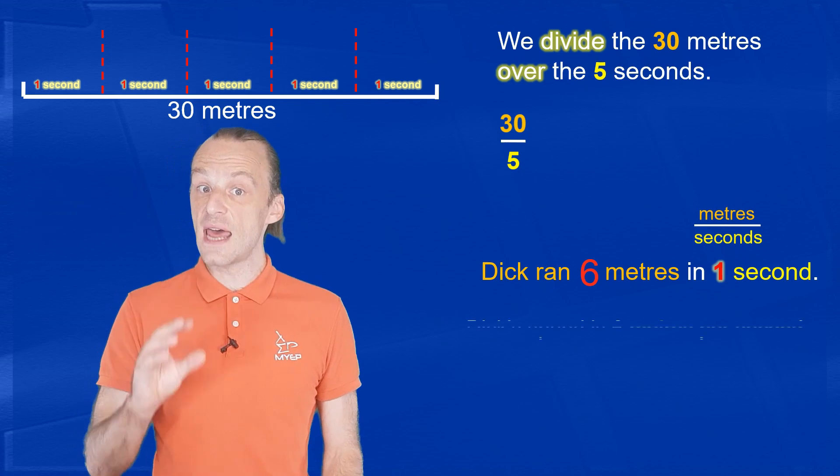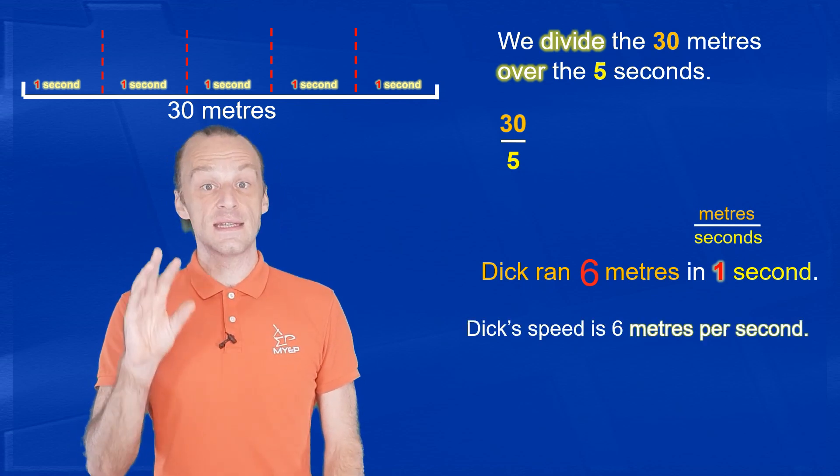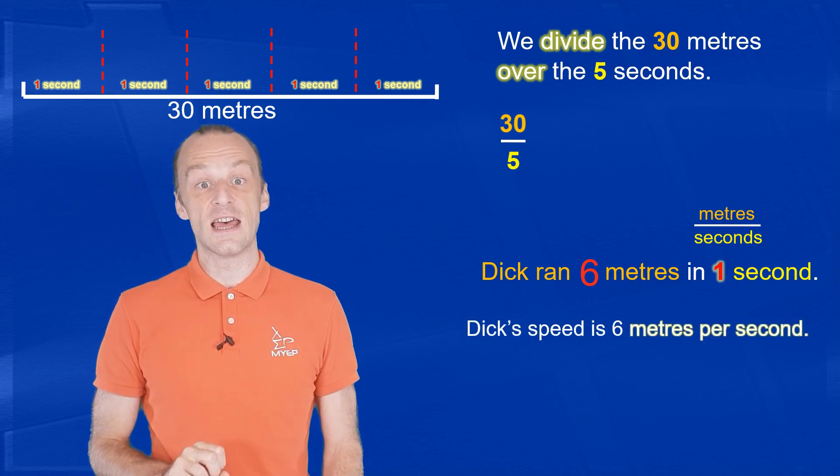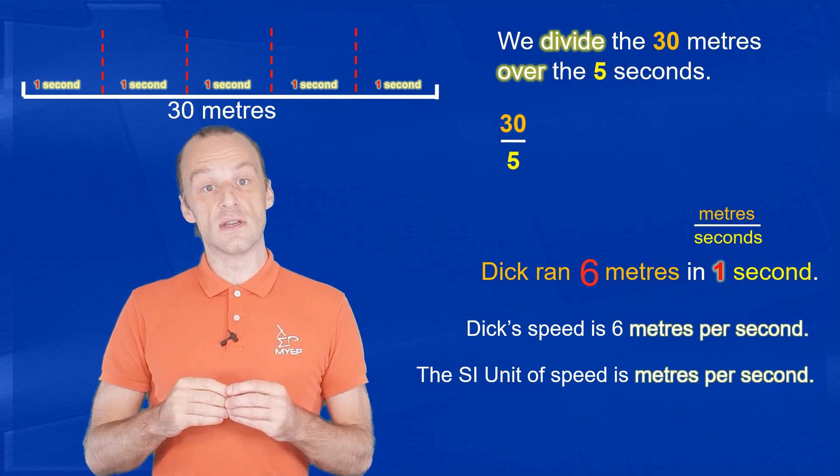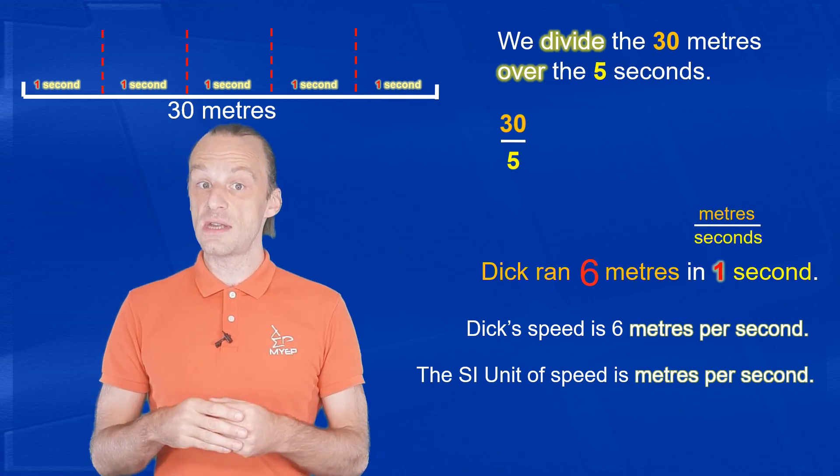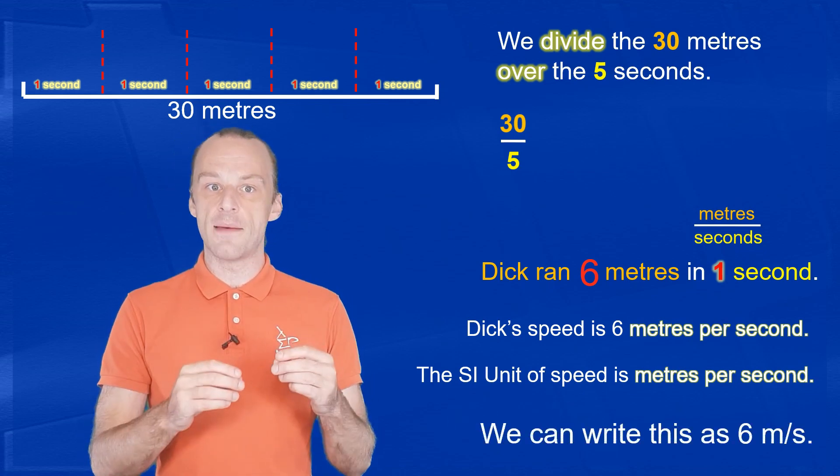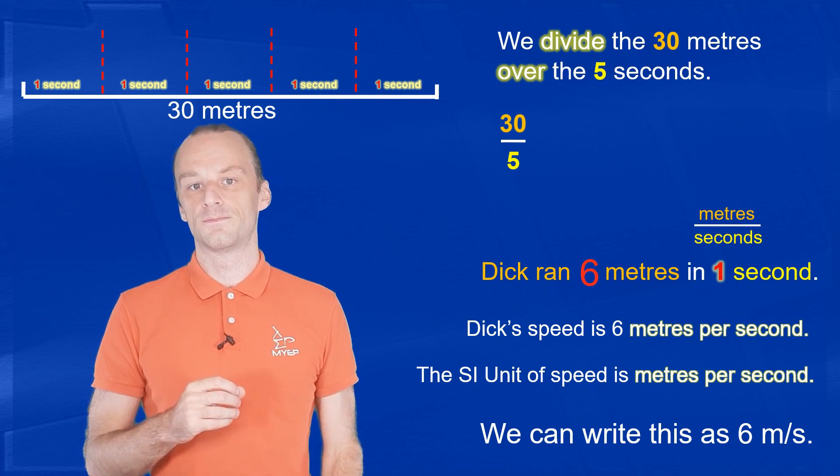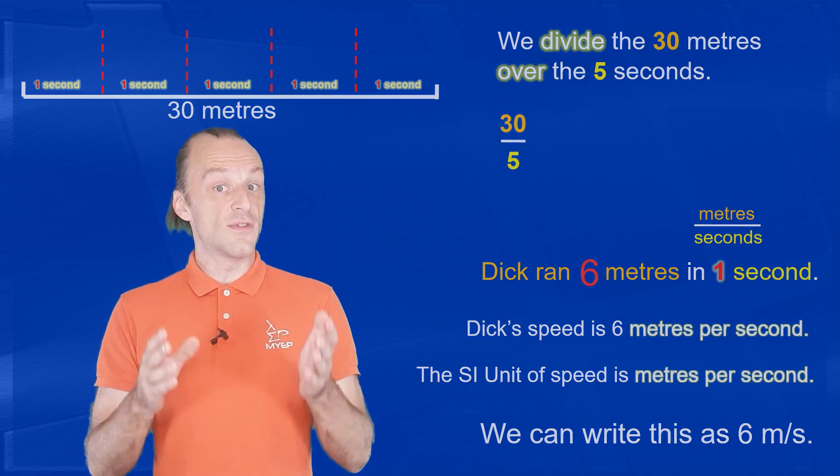So we can say that Dick's speed is six meters per second. And that's the SI unit of speed, the meter per second, which we can write as M slash S. So to find the speed, we divide the distance traveled over the time taken.